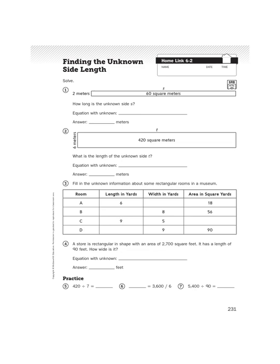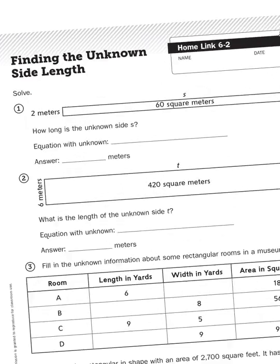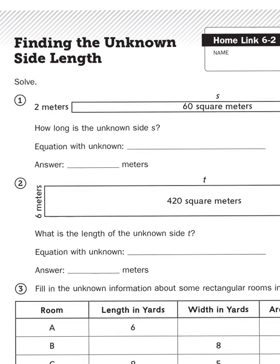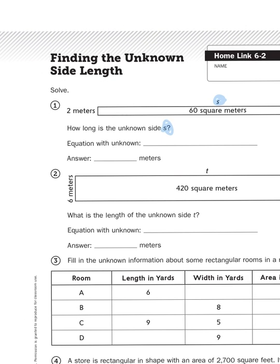If you take a look at the first problem, it says how long is the unknown side s? The side s belongs to this very long, very skinny rectangle that measures two meters wide, and we happen to know that the total area is 60 square meters.